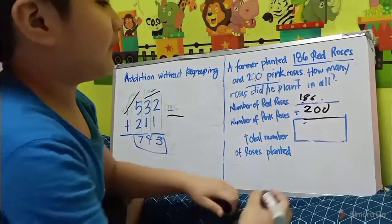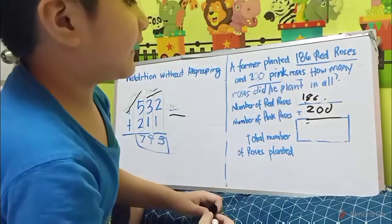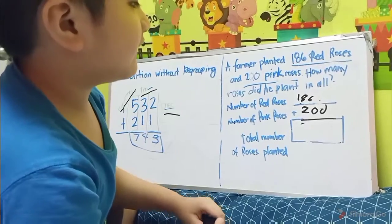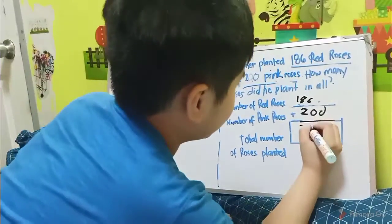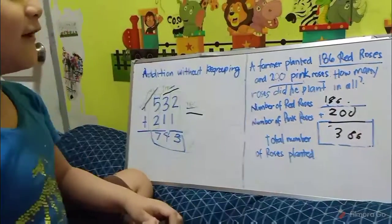6 plus 0 is 6. 8 plus 0 is 8. 1 plus 2 is 3. So, the answer is 386. That's all.